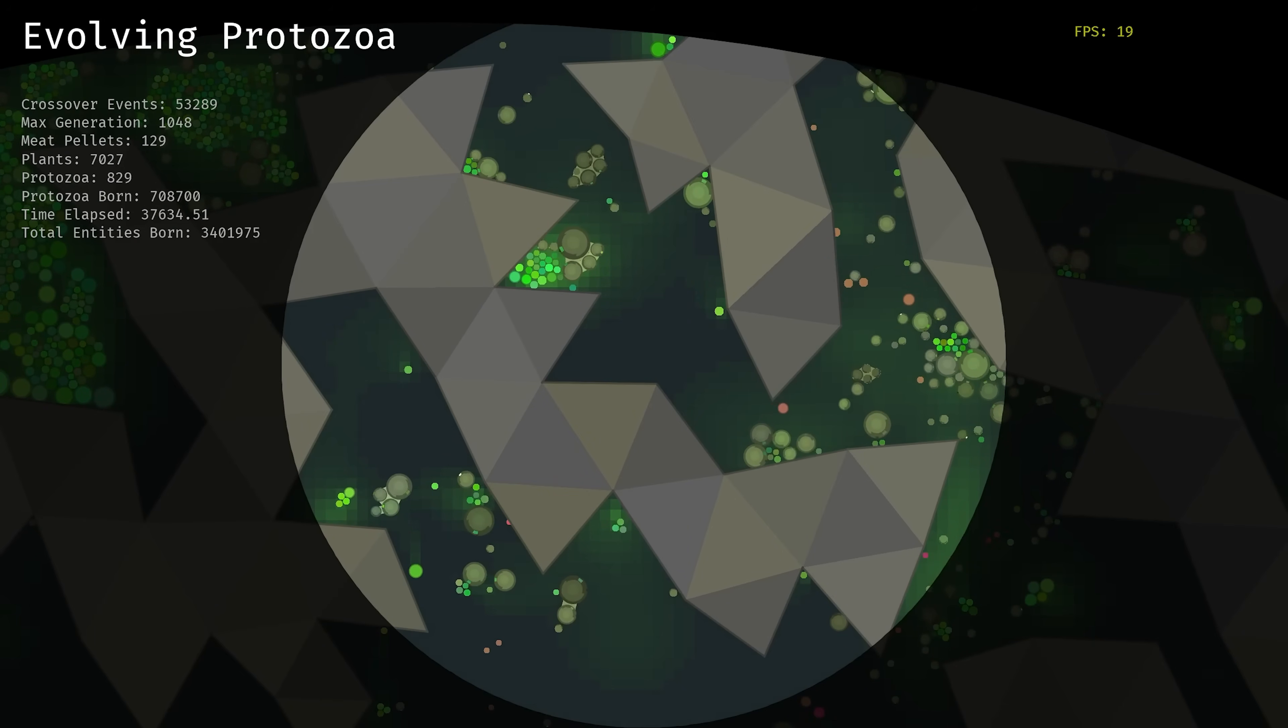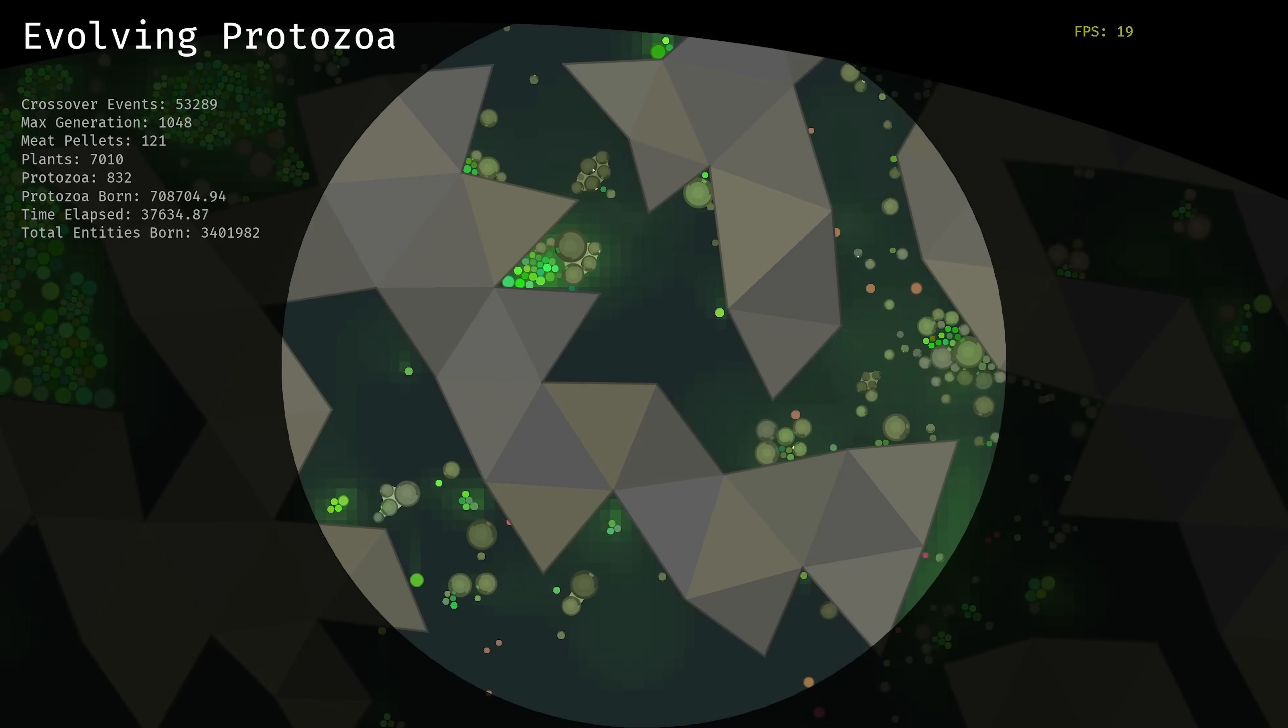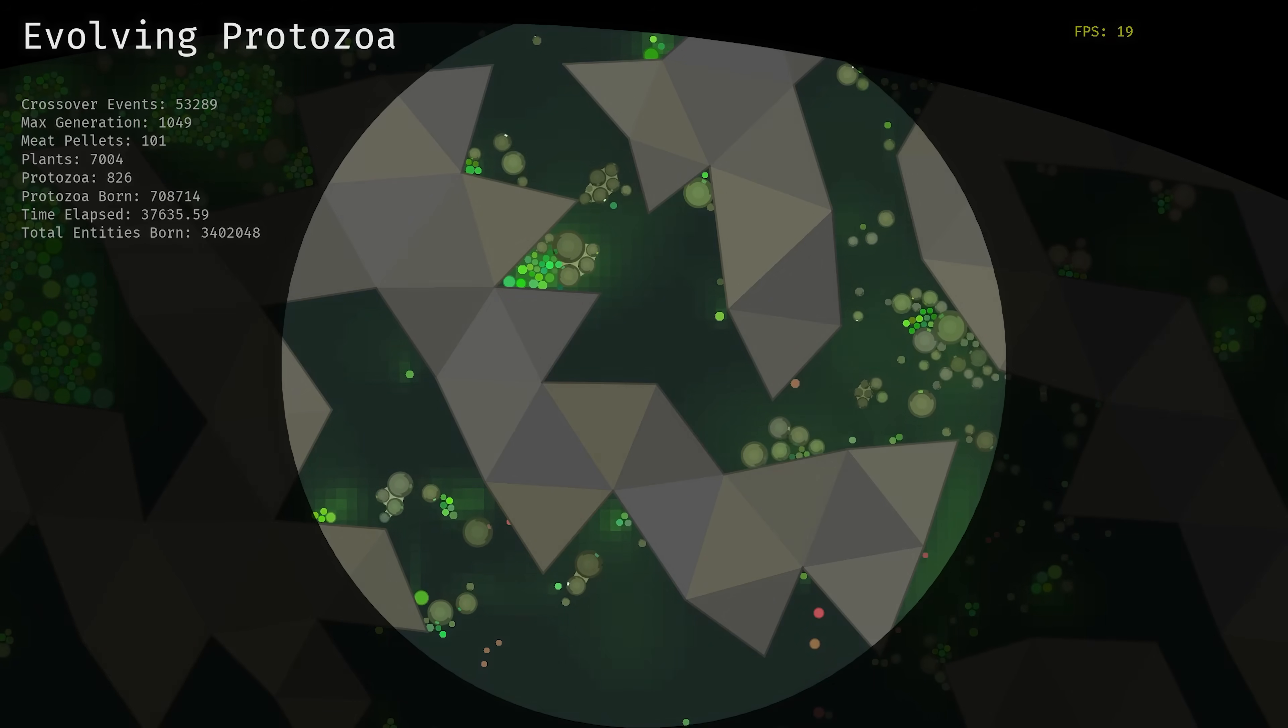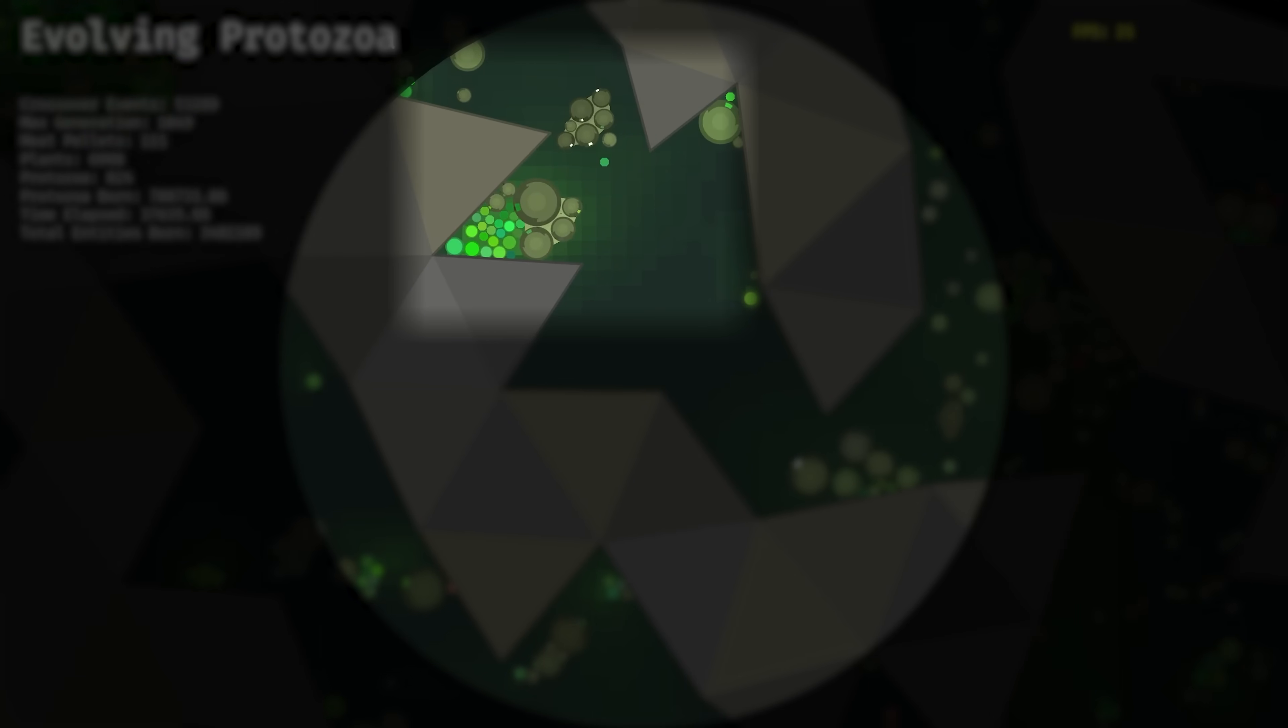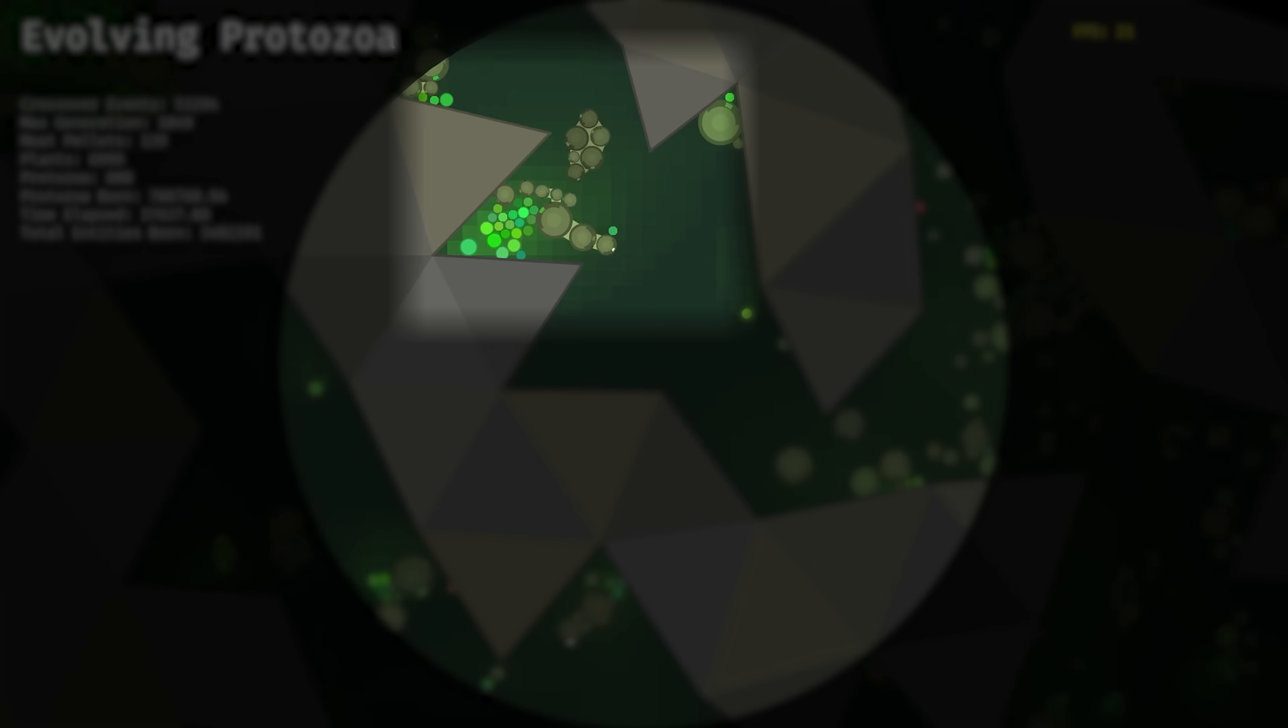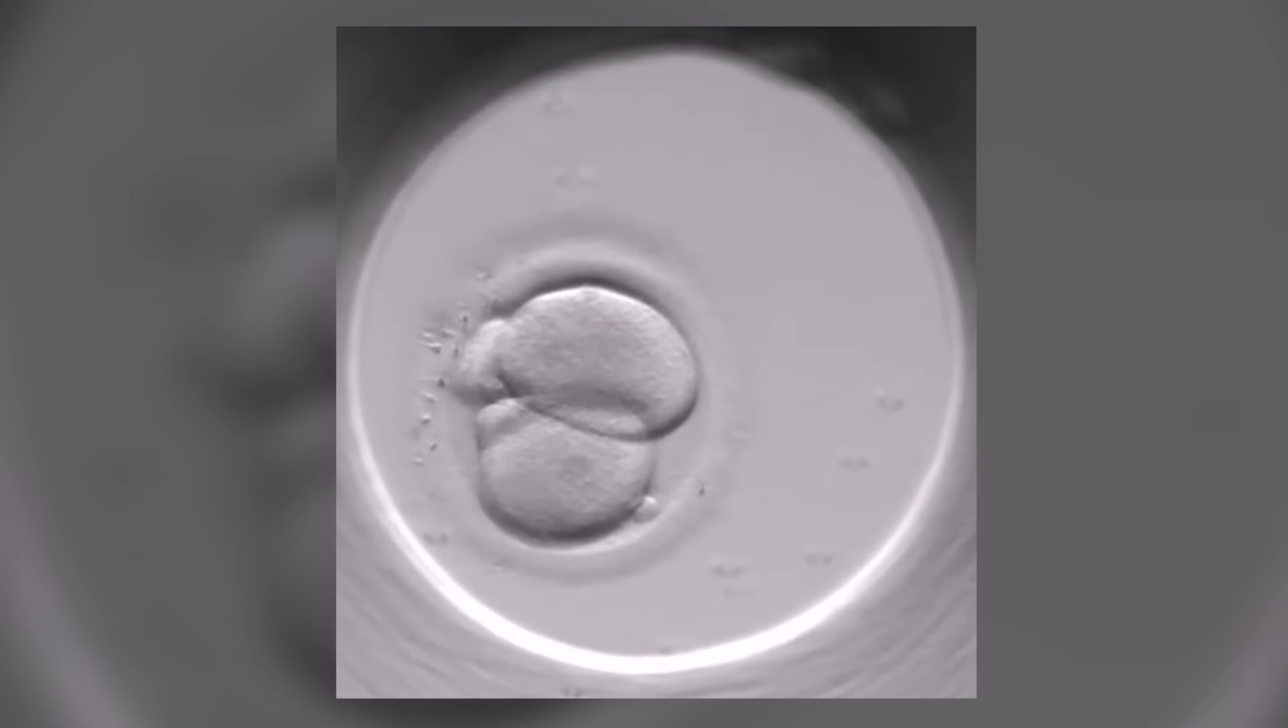Next, we're rejoining the simulation after over a thousand generations has passed, and we can see around 700,000 protozoa have lived and died. What we're seeing here is the emergence of multicellular structures starting to form. These structures are able to exist due to the presence of cell adhesion molecules being produced by the cells.